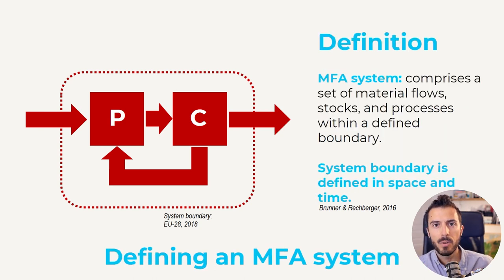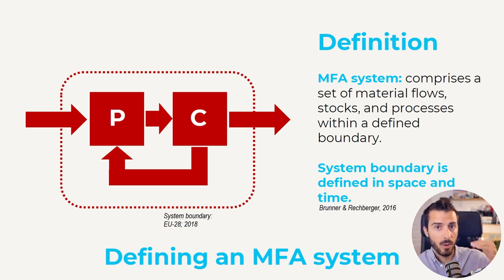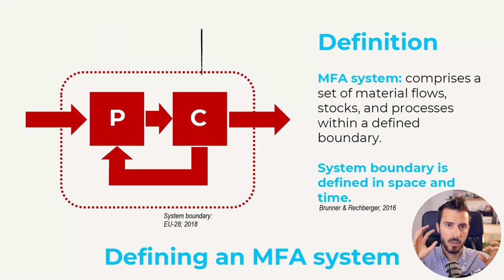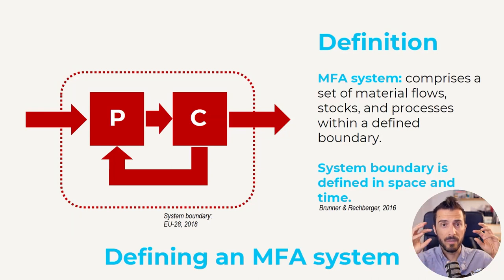There are many concepts to unpack here. An MFA system — or material flow system — is a combination of several things: first, the material flows, shown as arrows in the diagram; the stocks, meaning whatever stays within your system for more than a year; and the processes, which are the subsystems. Here we have box P and box C — production and consumption. You have imports going to production, production going to consumption, exports from consumption, and perhaps recycling going back to production.